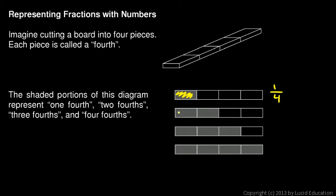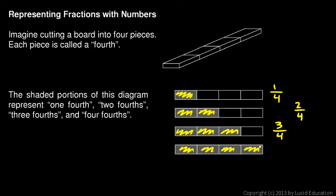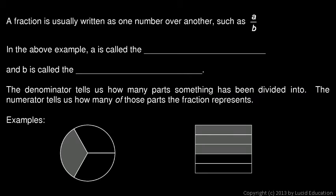One out of four pieces shaded is written as one-fourth, or one over four. Two of the four pieces shaded is written as two-fourths, which is the same as half the board. Three of four shaded is written as three over four. And four-fourths — all four pieces shaded — is the same as the entire board.